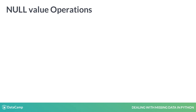Before we start off with treating missing values, let's get familiar with null value operations. There are two types of null values to be considered: one is the None type, which is a built-in Python data type, and the other is np.nan of NumPy, which stands for Not a Number. Both NumPy and pandas libraries use np.nan extensively for working with null values.